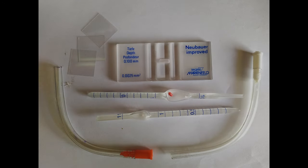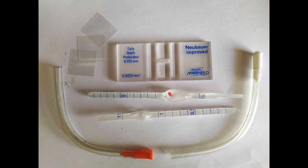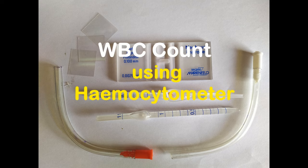In a previous video we talked about the components of a hemocytometer and what it's used for. In this video we're going to count the number of white blood cells in a sample of human blood using the hemocytometer.